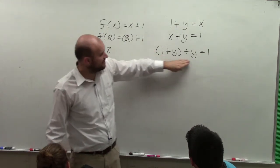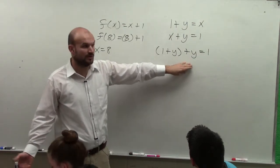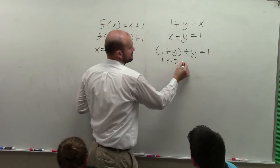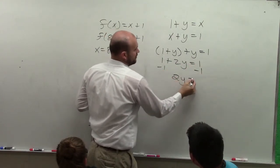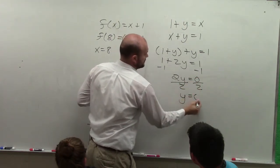Now, the reason why that's important is now we have an equation with just y, and we can solve an equation with one variable. I don't really need these parentheses. So it's 1 plus 2y equals 1. Solve for y, so I subtract 1 on both sides. 2y equals 0. Divide by 2. Y equals 0.